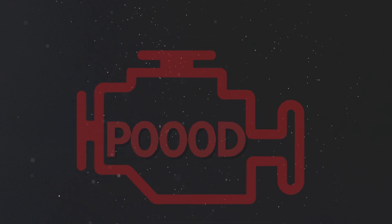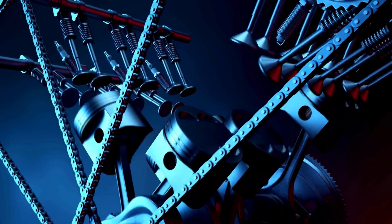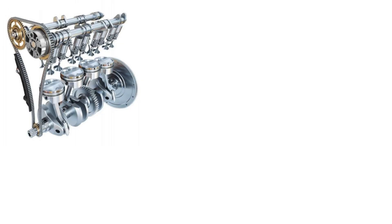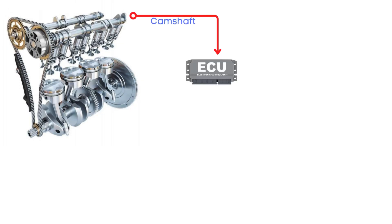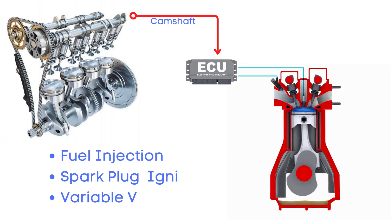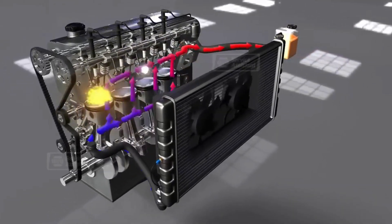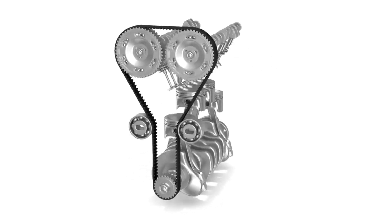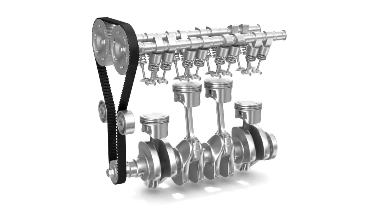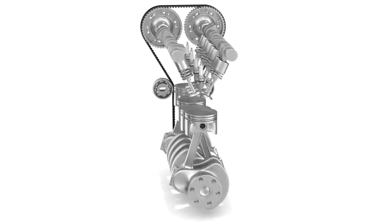Now let's learn why P000D was triggered. Your vehicle's camshaft sensor has a critical job — it measures the camshaft's position and sends that data to the Engine Control Unit (ECU). The ECU then uses this data to control essential timing functions like fuel injection, spark plug ignition, and variable valve timing, all of which are vital for efficient engine performance. The camshaft is rotated by the crankshaft through a timing belt or chain, so both need to stay in perfect sync for the engine to run smoothly.